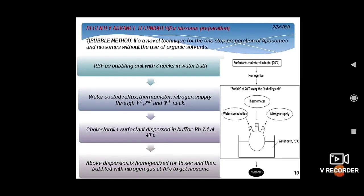The bubble method is a noble, one-step technique for preparing Niosomes and liposomes without the use of organic solvent. A round-bottom flask with three necks is used as a bubbling unit, with water, a reflux thermometer, and nitrogen supply. Cholesterol and surfactant are dispersed in buffer at pH 7.4 at 40°C, homogenized for 15 seconds, then bubbled with nitrogen gas at 70°C to produce Niosomes.